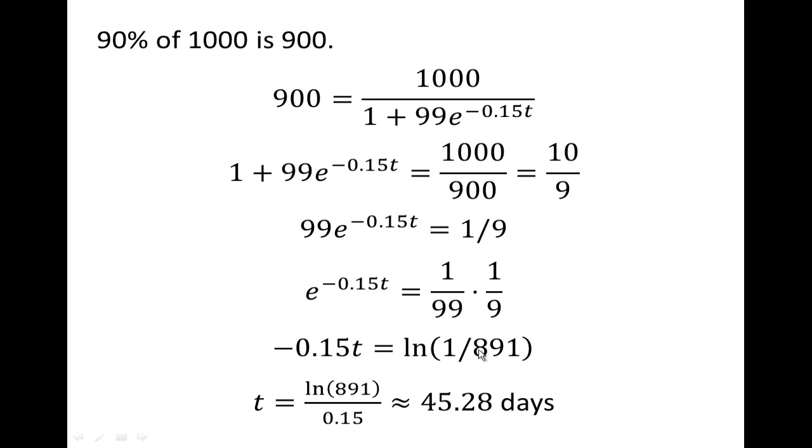We can use the property of logarithms. Remember that the natural log of an expression is the opposite of the natural log of its reciprocal. So if I bring this 891 up to the numerator, that is, take the reciprocal of 1 over 891, we're going to pull a negative out in front of the natural logarithm, which when I divide both sides by negative 0.15 will reduce. And this turns out to be 45.28 days, until 90% of the students have been infected with calculus fever.